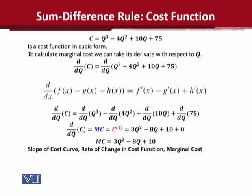MC's final value is 3q squared minus 8q plus 10. This can be interpreted as marginal cost, the slope of the total cost function, or the rate of change of the cost function. These three names are equally applicable.